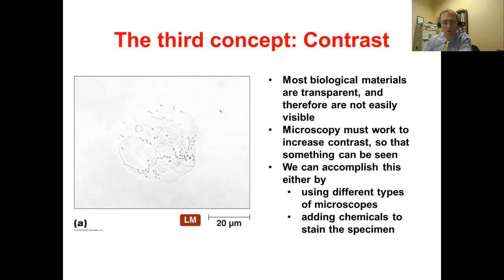Alternatively, we can add chemicals to the specimen, which will also increase contrast. The problem with that approach is that many times the chemicals we might add to the specimen are toxic and may kill a microorganism we want to look at. Depending on what we want to do with our specimen after we've looked at it under the microscope, we may choose to add chemicals to increase the contrast and stain the specimen, or we may want to play with some of the properties of our light microscope and use a different type of microscopy, maintaining the specimen living and being able to recover it after we're done.